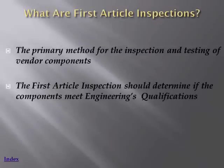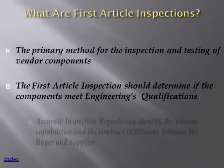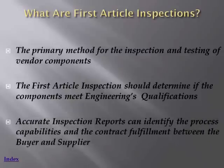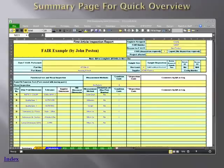The First Article Inspection should determine if the components meet engineering qualifications. These can be linear dimensions, cosmetic standards, as well as physical and electrical properties. An accurate inspection report can identify the process capabilities and the contract fulfillment between buyer and supplier. This is an example of a FAIR report in Excel.